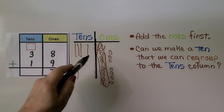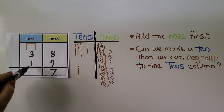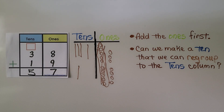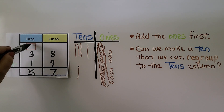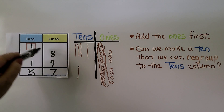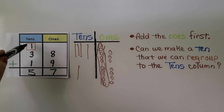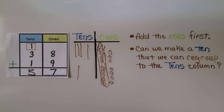We count the tens: one, two, three, four, five. Thirty-eight plus nineteen is equal to fifty-seven. The ten that we regrouped we put up here — eight plus nine is seventeen, so we put the ten up here and the seven here. It's equal to fifty-seven.